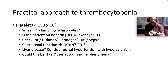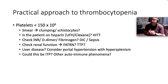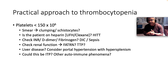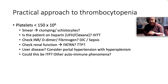So, by and large guys: low platelets — look at the smear. Is there clumping? Are there schistocytes? Is the patient on heparin? Check your INR, D-dimer, and fibrinogen. Run a renal function. Consider the possibilities of DIC and TTP. Is the patient known with liver disease? Consider portal hypertension with hypersplenism. And lastly, is this ITP?